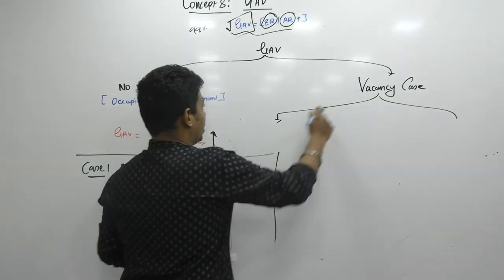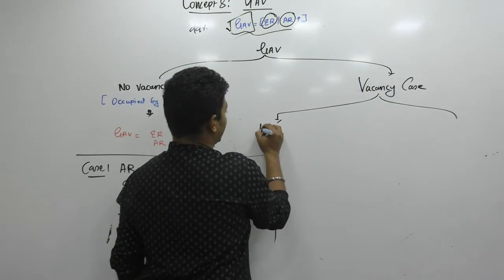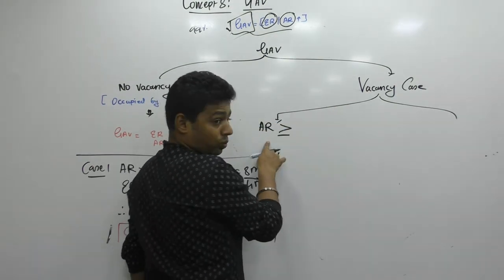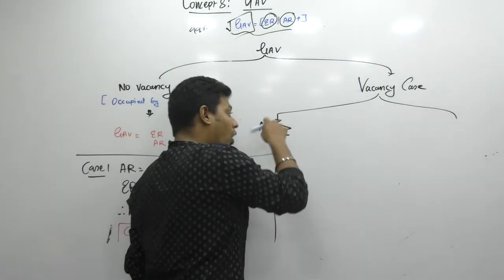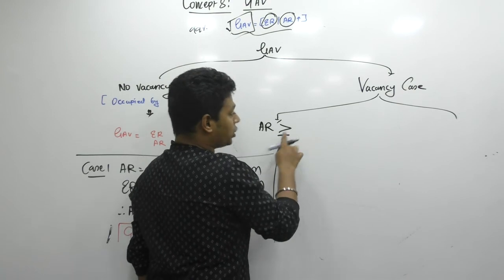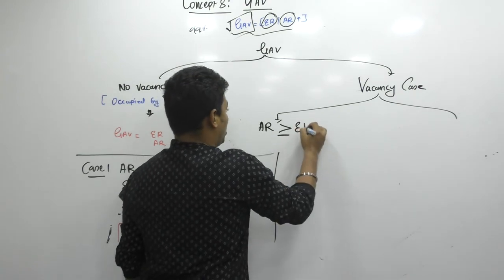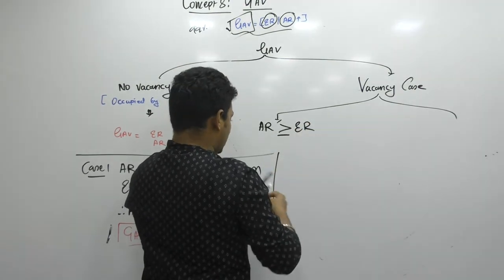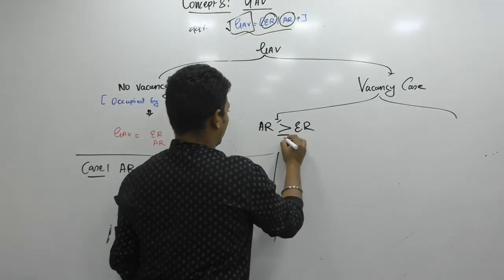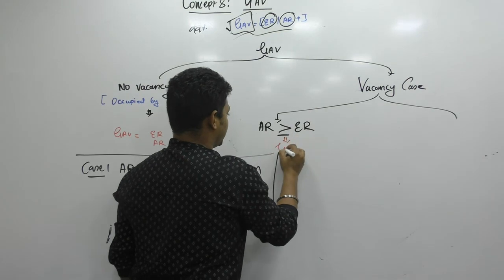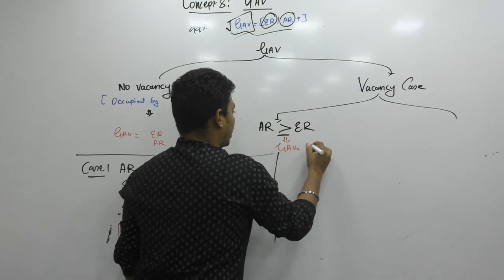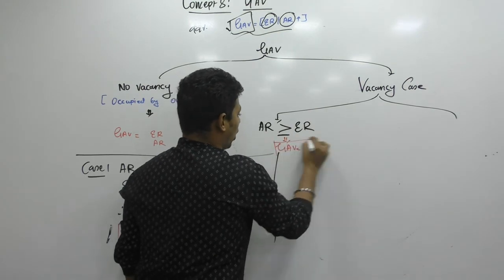Even if vacancy is there and still actual rent is more than or equal to expected rent — and this actuality is also important — then GAV is equal to actual rent. This is the law. Not whichever rate is higher. GAV is equal to actual rent.